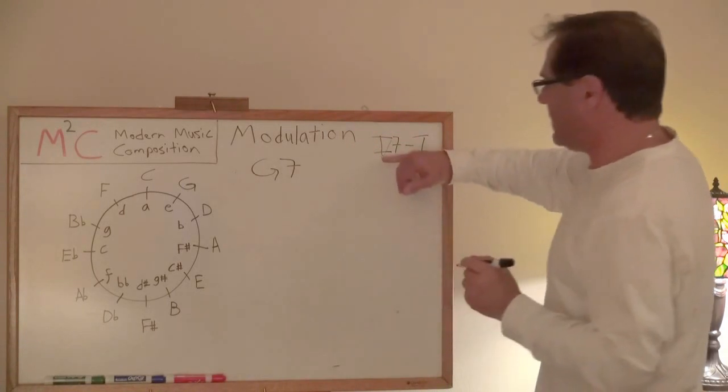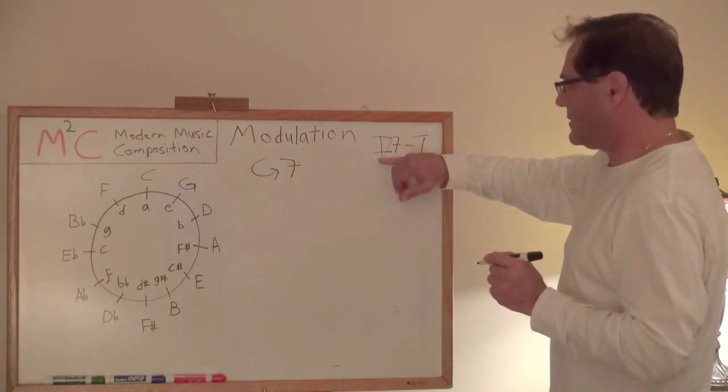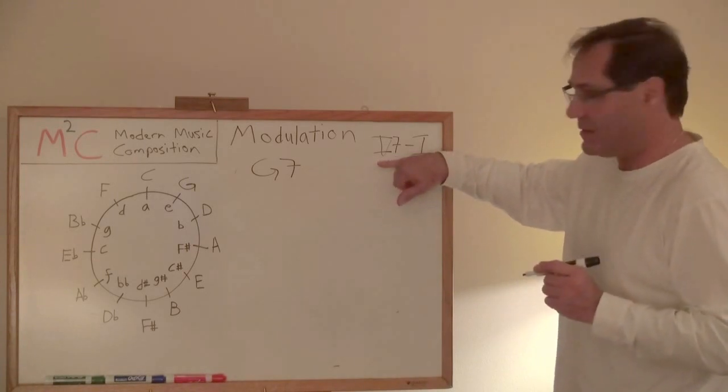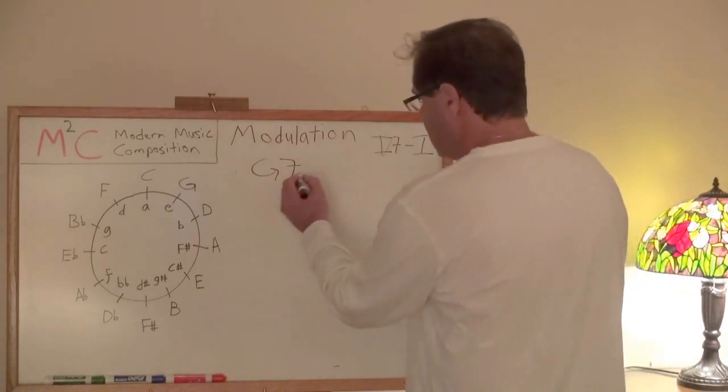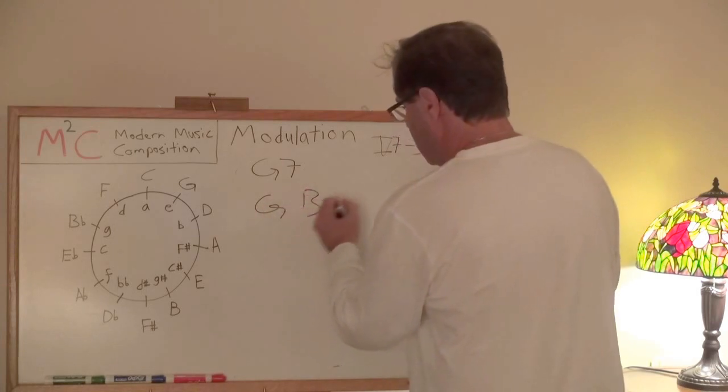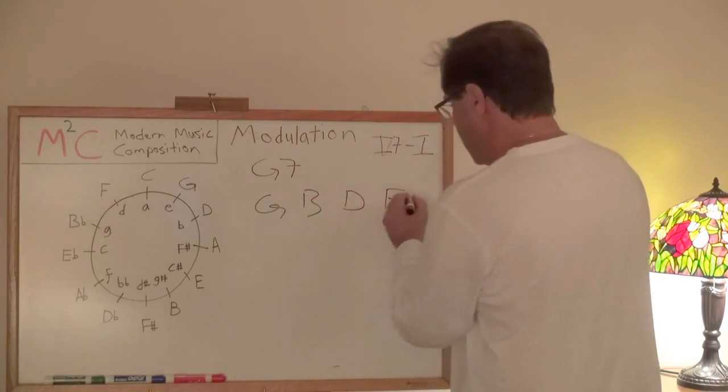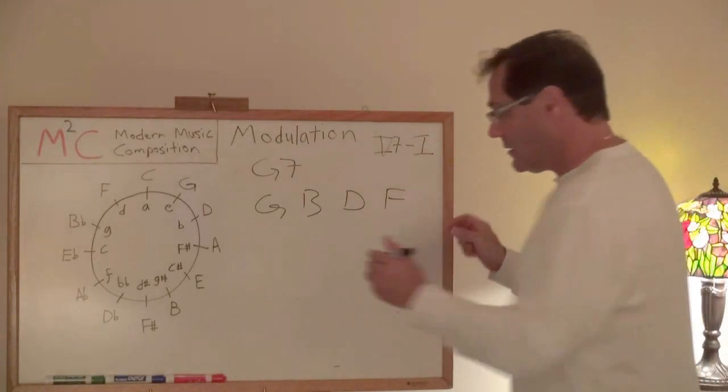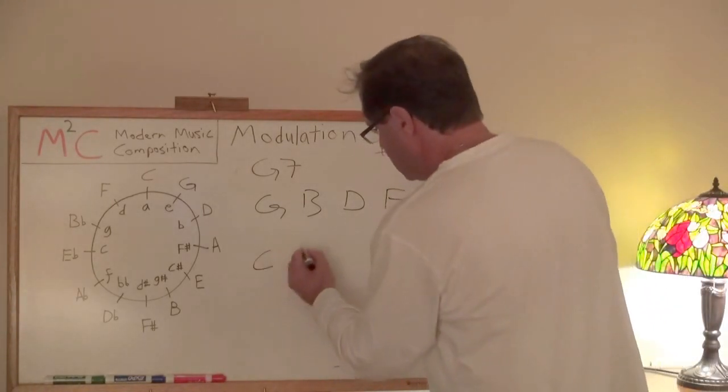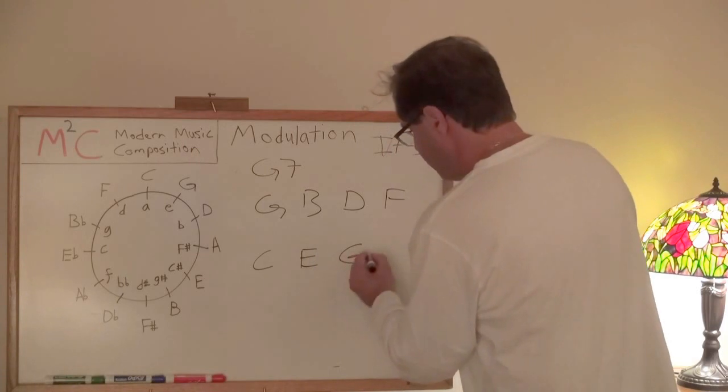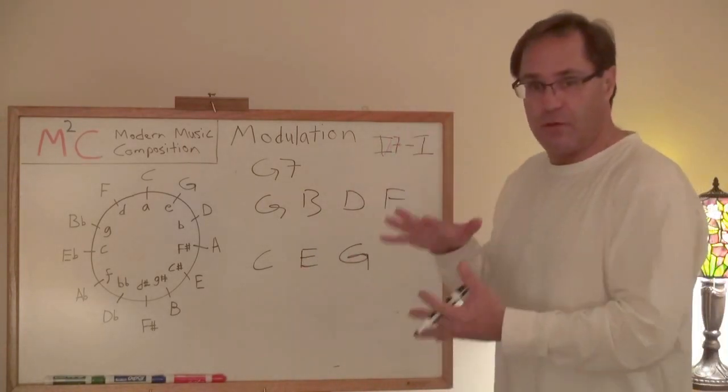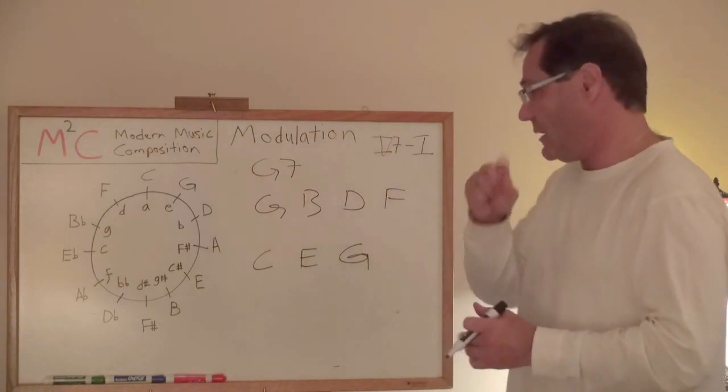So we're doing a dominant to a tonic progression, but we're taking the dominant seventh. So G7, we know that that's going to be G, B, D, F. Our tonic in this case is C. So C, D, E, F, G. You'll see how things start to fit really well here. And this is why.